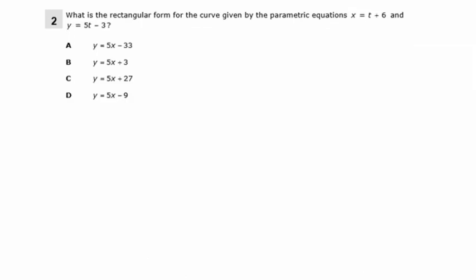Next problem 2, what is the rectangular form for the curve given by the parametric equations x equals t plus 6 and y equals 5t minus 3? We can go to our calculator again and see which one would best match here. But what I'm going to do instead is take this equation here, x equals t plus 6, and we're going to solve for t by subtracting 6 from both sides here. So t is equal to x minus 6.